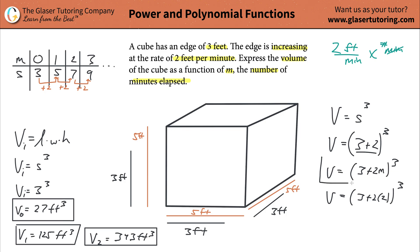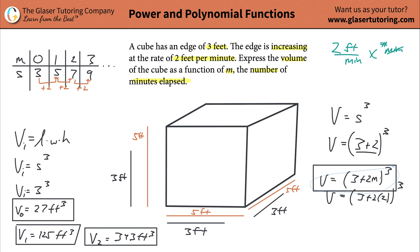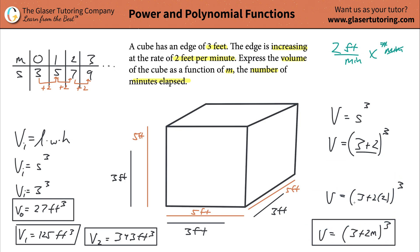So this right here — V = (3 + 2M)³ — represents our formula and is the answer. Now if I asked you what's the volume after 129 minutes elapses, you just plug in 129 and find the volume. That's the power of formulas.